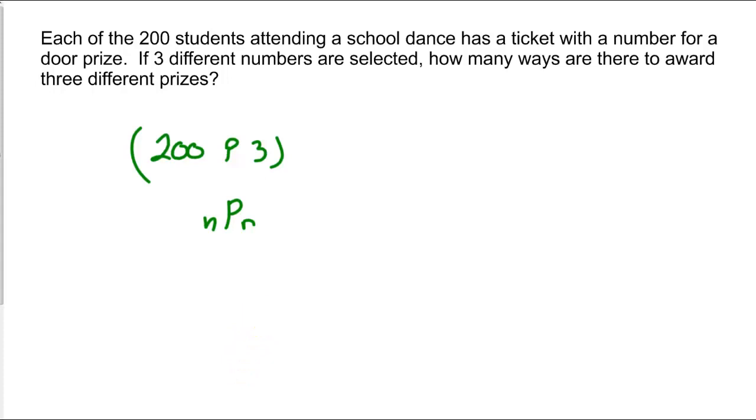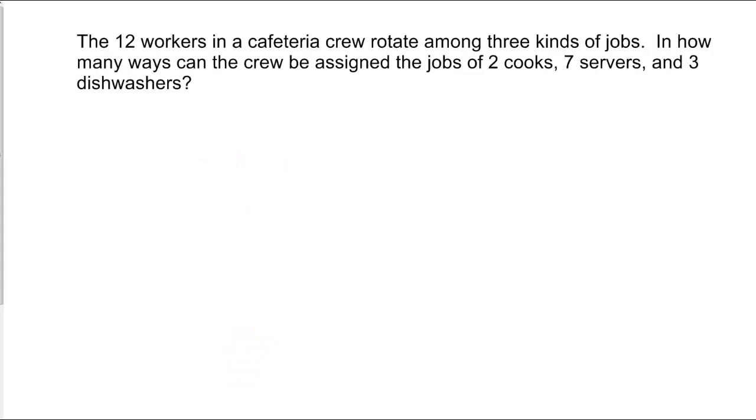In our next problem, we have 12 workers in a cafeteria, and they rotate among three different jobs. We want to know how many ways the crew can be assigned to the jobs: two cooks, seven servers, and three dishwashers. Well, this problem, we start with our 12 workers, and we're choosing two for cooks. So this would be 12C2. And what's different about this problem is the order in which you pick them for the cooks doesn't matter.